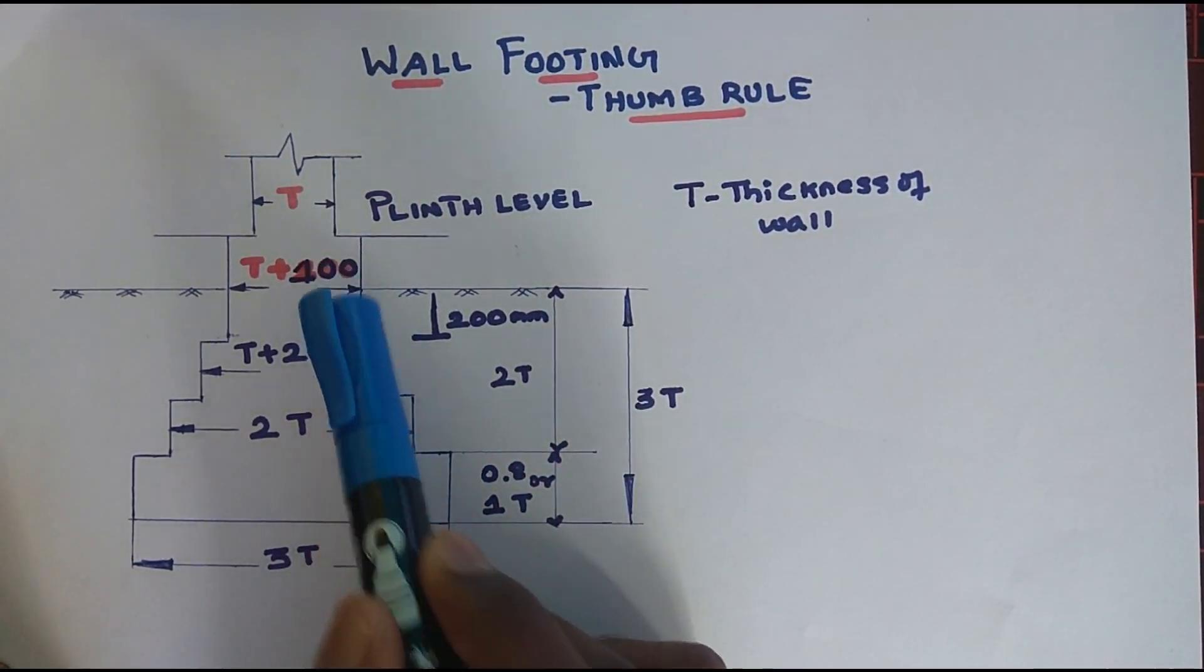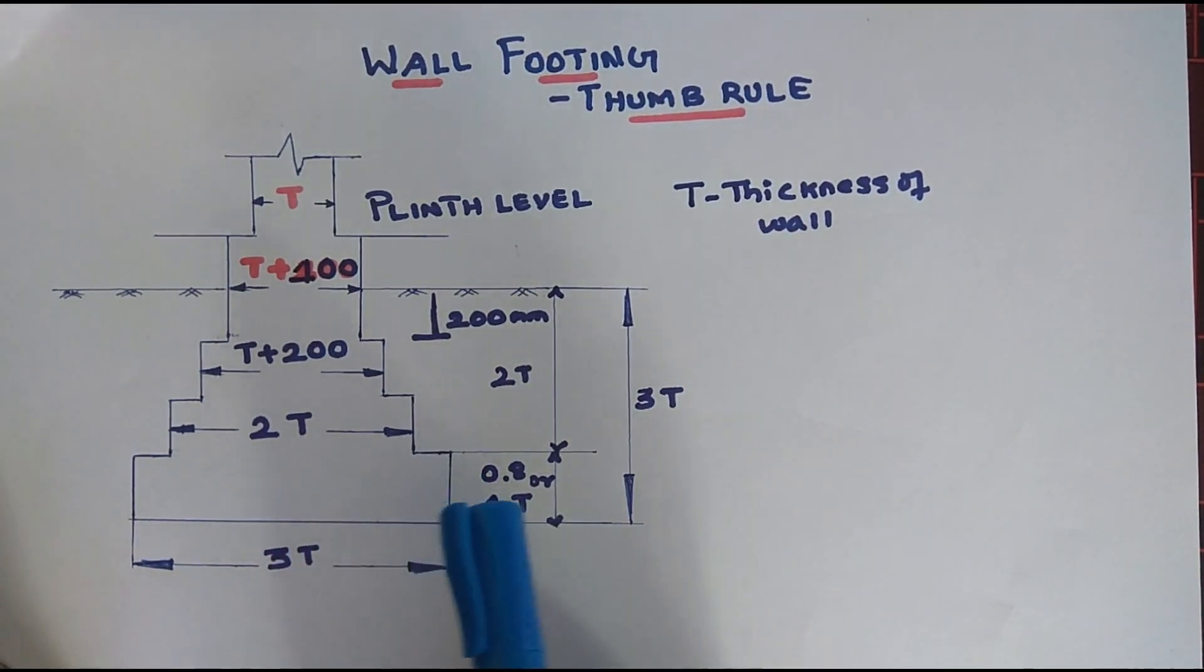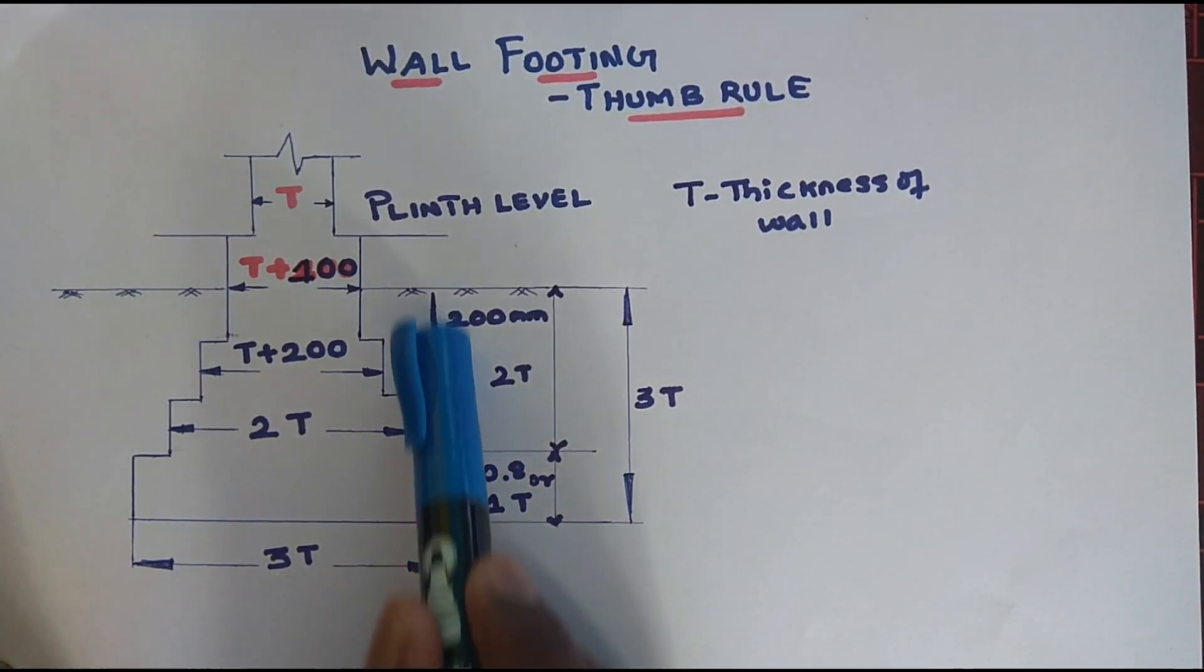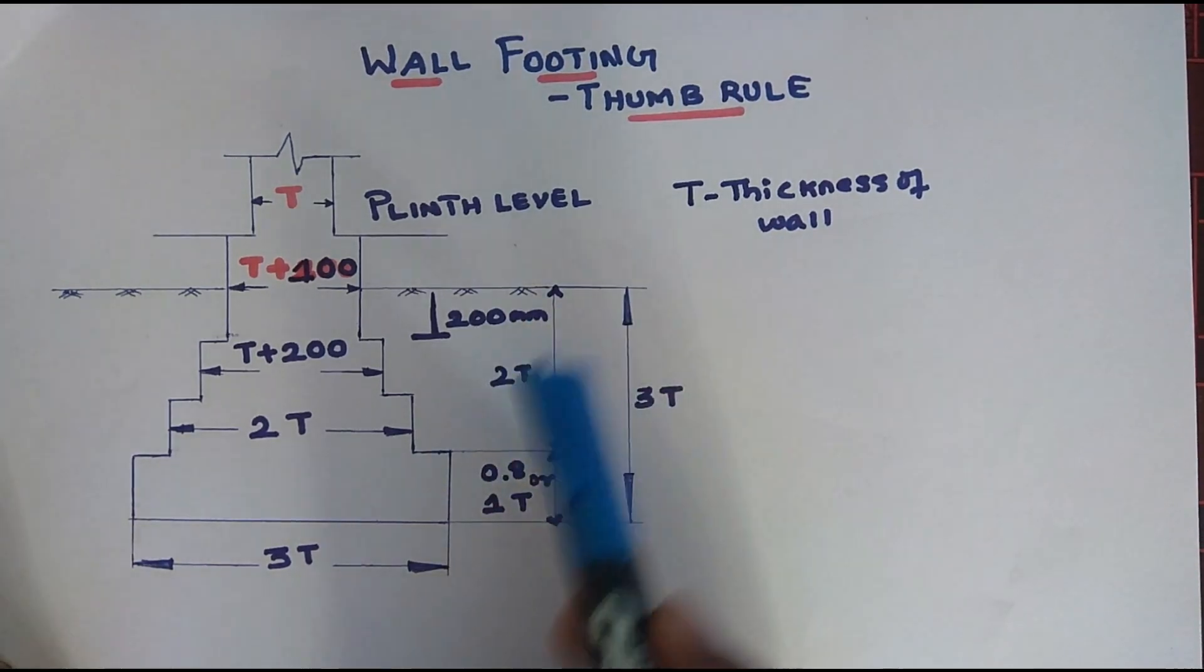Here we add the depth, the depth of one step footing, because we add the width. We add the thickness of wall, 2 times thickness of wall.